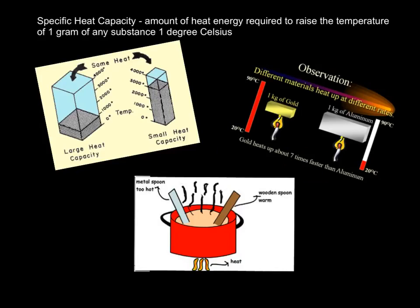So specific heat capacity—this is basically how fast things heat up. This is the amount of energy required to raise the temperature of one gram of any substance, not just water, one degree Celsius.